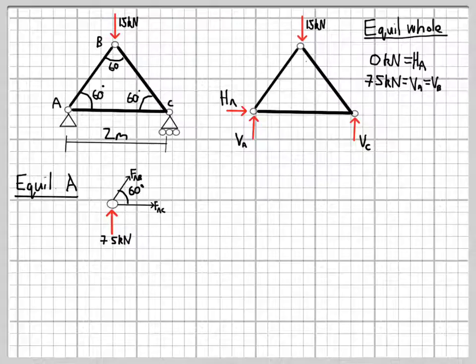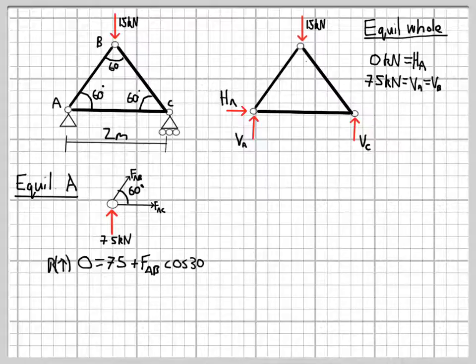We'll start by resolving forces vertically. The external force, the 7.5 kN, is acting up, and then there's a vertical component of the force in member AB. We're going to assume that the force in the member is positive, so there's a positive sign in the equation there.